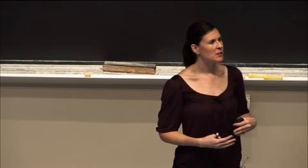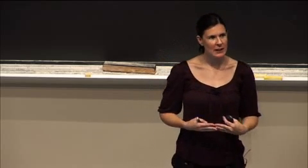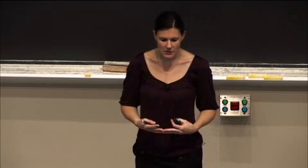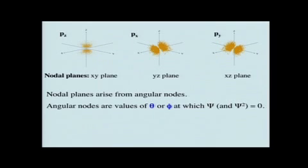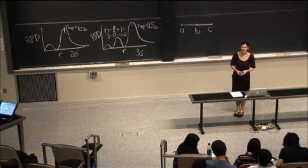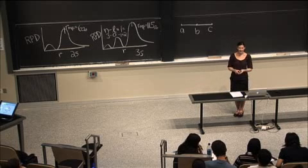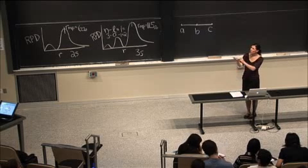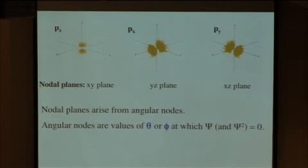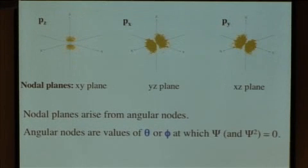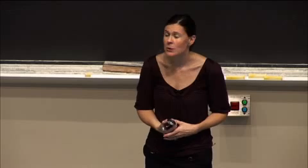Let me get more specific about what we mean by nodal plane and where the idea comes from. Nodal planes arise from anywhere you have angular nodes. We talked about radial nodes when doing radial probability density diagrams. You can also have angular nodes — values of theta or phi at which the wave function and wave function squared, or the probability density, are going to be equal to zero.